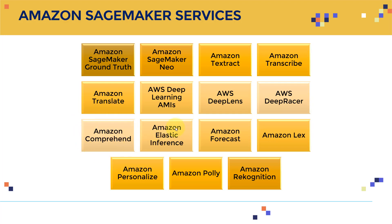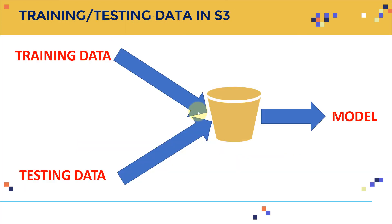There's also Amazon Comprehend for understanding text and performing sentiment analysis, Amazon Elastic Inference, Amazon Forecast for predicting the future, Amazon Lex, Amazon Personalize, Amazon Polly for text-to-speech, and Amazon Rekognition to detect and classify images. We'll discuss all of these in great detail.